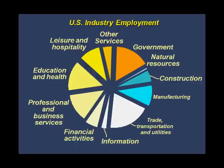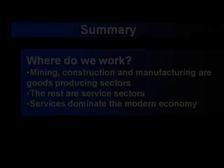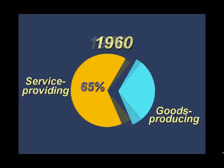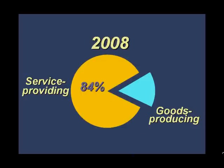You may have heard that we've entered a post-industrial phase, that we are a service economy. In fact, most of us are employed in service industries. Goods producing industries include mining, construction, and manufacturing. The rest are service industries. The transition to this phase has been going on for a long time. In 1960, service producing industries accounted for 65% of our jobs. In 1978, services accounted for 72% of our jobs. In 2008, they accounted for 84% of our jobs. So yes, the service sector is growing in importance, but it's been the dominant sector for a long time.